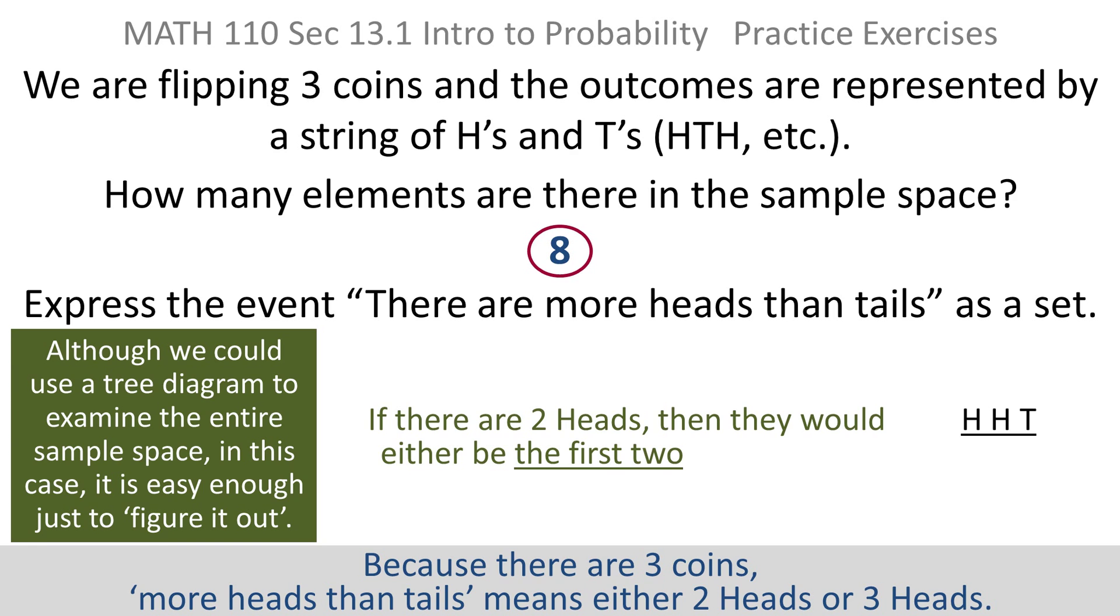But what I'd say is, if there are two heads, those two heads have to either be the first two, which makes head, head, tail, or the last two, which would be tail, head, head, or the tail could be in the middle and the heads would be on each side and you'd get head, tail, head. So there are only three ways to get two heads.